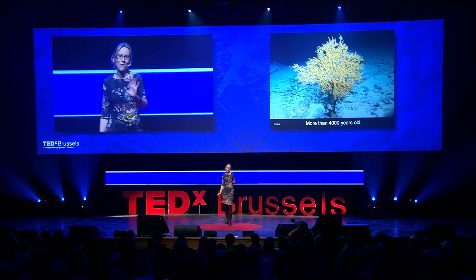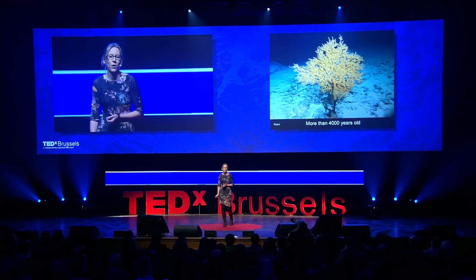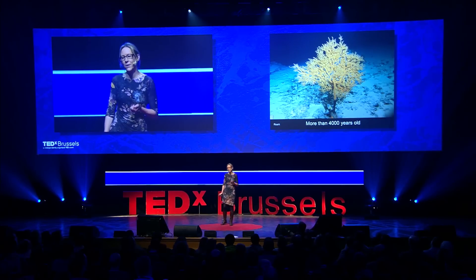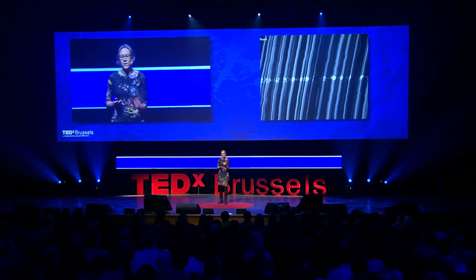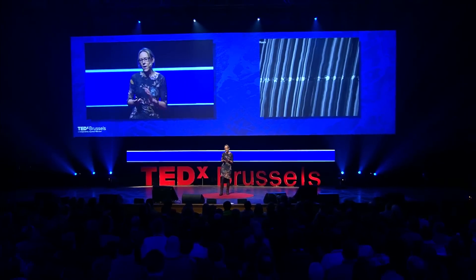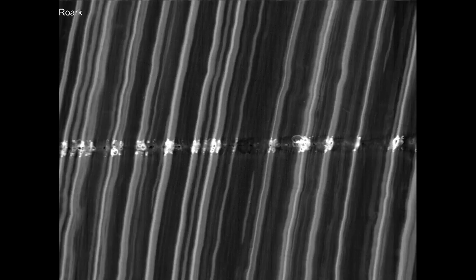Some of these organisms live even longer. This is a black coral called Leopathes, an image taken by my colleague Brendan Rourke about 500 meters below Hawaii. 4,000 years is a long time. If you take a branch, polish it up — this is about 100 microns across — and take analyses across it, Brendan has been able to show these are actual annual bands. So even at 500 meters deep, corals can record seasonal changes, which is pretty spectacular.